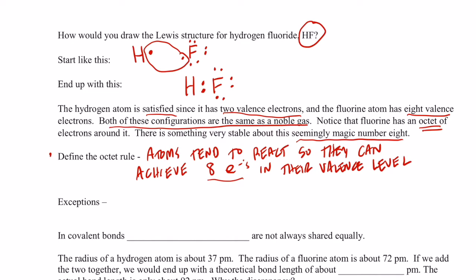We often call these eight electrons in their valence level four pairs. So we say they react to get four pairs of electrons in their outermost energy level.